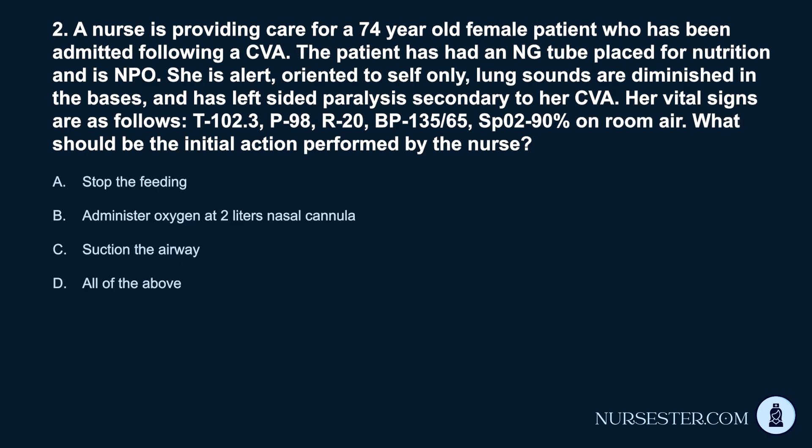Question 2. A nurse is providing care for a 74-year-old female patient who has been admitted following a CVA. The patient has had an NG tube placed for nutrition and is NPO. She is alert, oriented to self only, lung sounds are diminished in the bases, and has left-sided paralysis secondary to her CVA. Her vital signs are: T 102.3, P 98, R 20, BP 135/65, SpO2 90% on room air. What should be the initial action performed by the nurse?